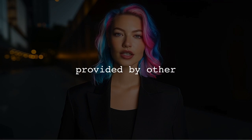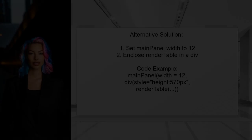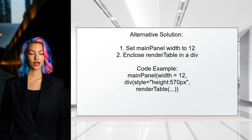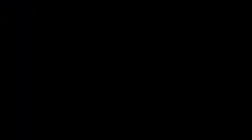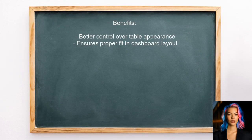Now let's look at answers provided by other users. An alternative solution suggests adjusting the width of the main panel — specifically, setting the width to 12 and enclosing the table within a div element. This method effectively extends the table's width and allows for better control over the table's appearance, ensuring it fits well within the dashboard layout.